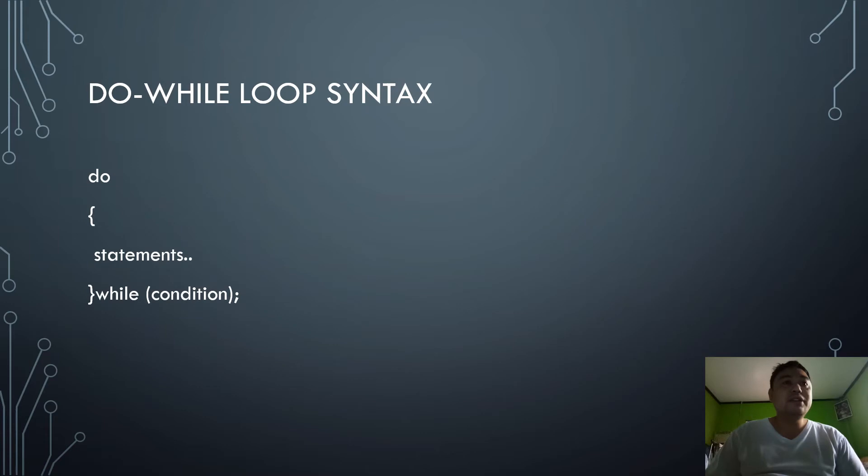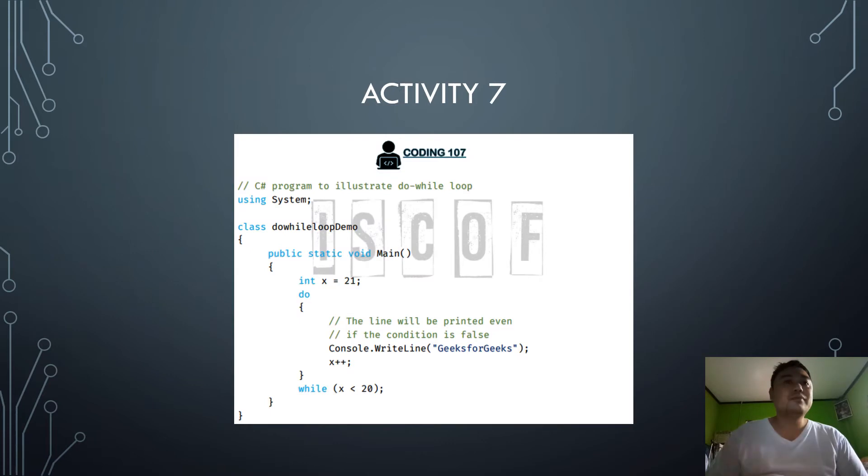You can see here in our do while loop syntax, you have a do statement, then start of the loop, then statements, and the while condition. For our activity number seven, you are given the chance to solve or to encode the do while loop, and then afterwards upload it to our Google Classroom.